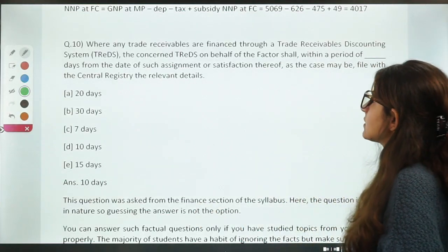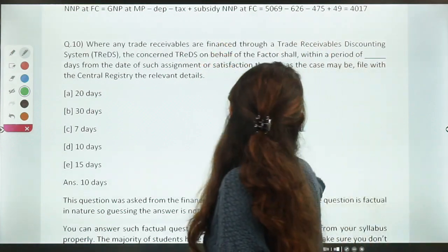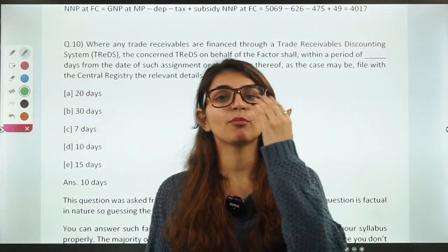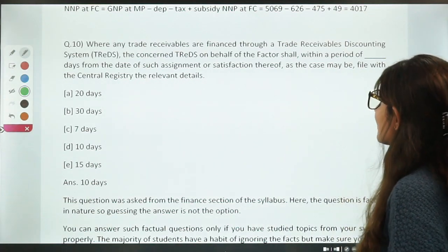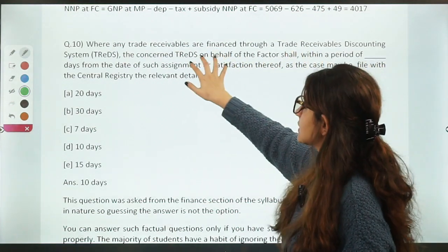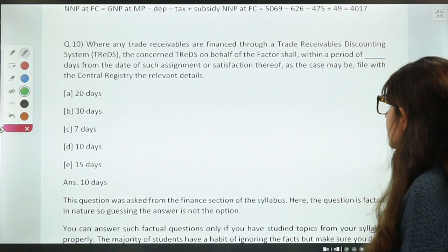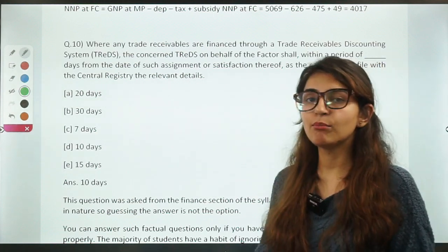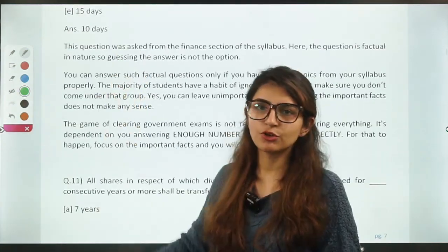The next question was tricky — it was generally not covered in the course and was related to current affairs. It was about TREDS (Trade Receivables Discounting System). The question asked: when any trade receivables are financed through TREDS, the concerned TREDS shall, within a period of how many days, file with the central registry the relevant details? The answer is 10 days. This was a very in-depth provision-related question about TREDS, which would have been confusing. But now that we have read it, if a similar question is asked in your exam, you should be able to solve it.